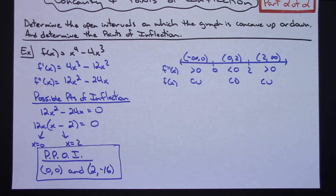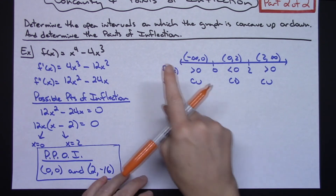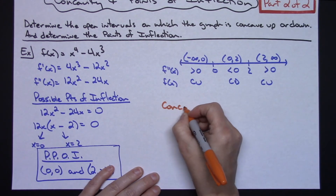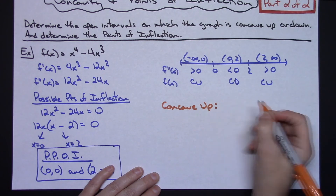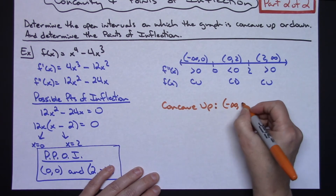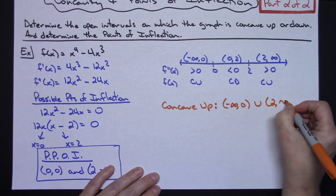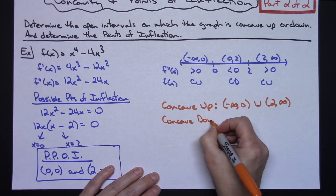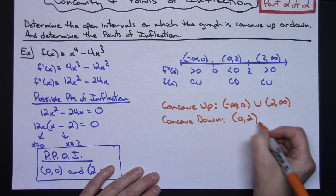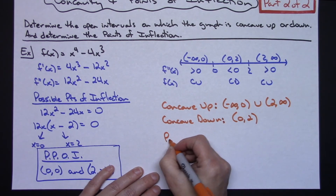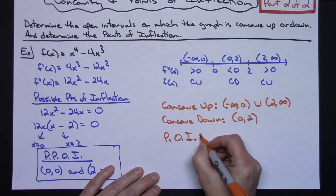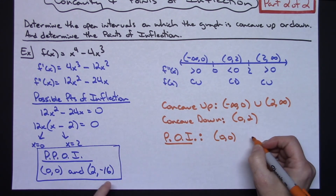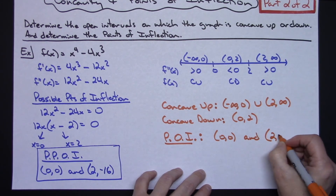To summarize: the function is concave up on the open intervals from negative infinity to zero and from two to infinity. The function is concave down on the interval from zero to two. The points of inflection are at (0, 0) — where concavity changes from up to down — and at (2, -16) where concavity changes from down to up.